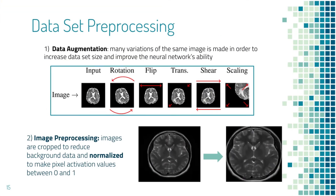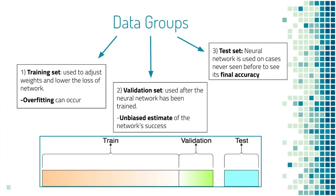Before applying the neural network to an image, the dataset of MRI images is augmented, in which many variations of the same image are created. This increases the size of the dataset and extends the scope of the neural network. The images are then processed, cropped to only include the area being studied, and normalized to make the pixel activation values between zero and one. The set of images is divided into three groups: training, which contains the most pictures, validation, and finally testing. The network uses the training set to adjust its weights and lower the loss. Overfitting can occur in which the network gets too comfortable with predicting the training cases and is unable to correctly predict validation or test cases, so it is crucial to stop training at a reasonable point.